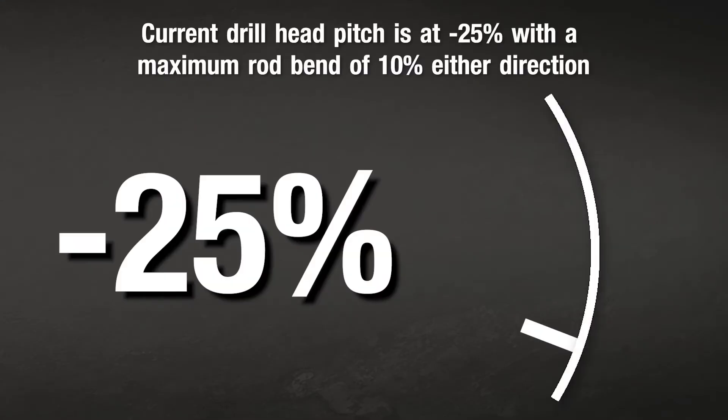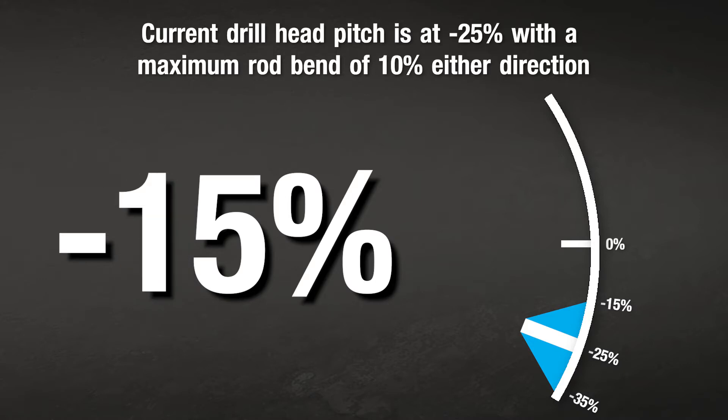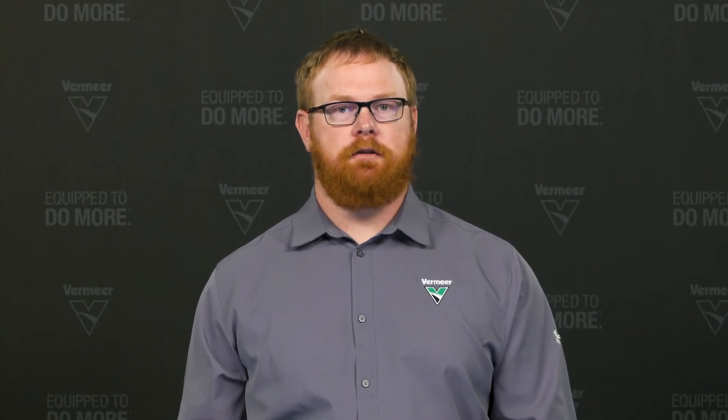Since my drill head is at a negative 25% pitch, the maximum rod bend of 10% allows a change down to negative 35% or up to a negative 15% and anywhere in between. First, decide what depth you need to be at at the end of rod two. Then figure out what pitch will get you there.